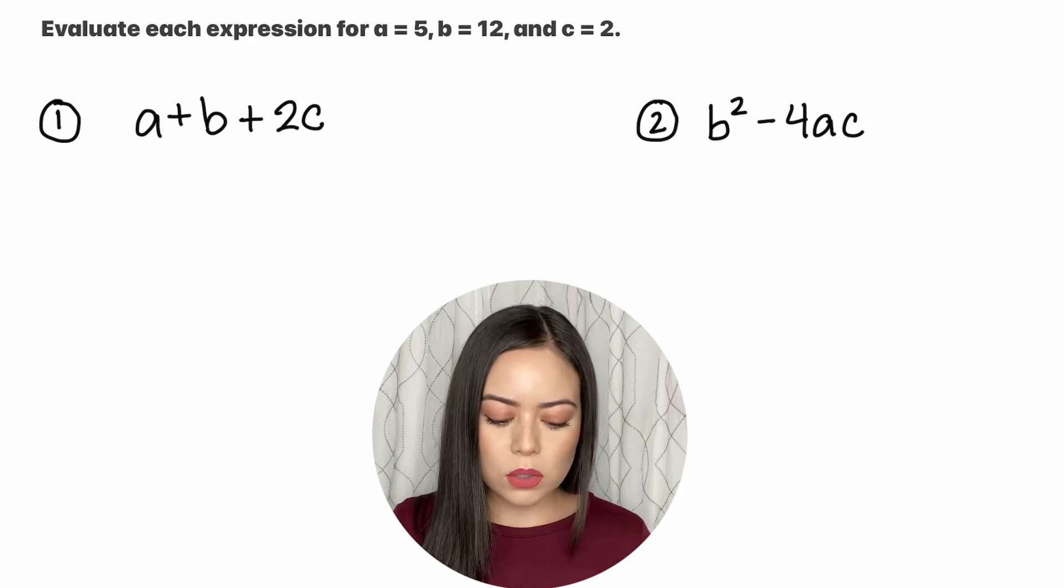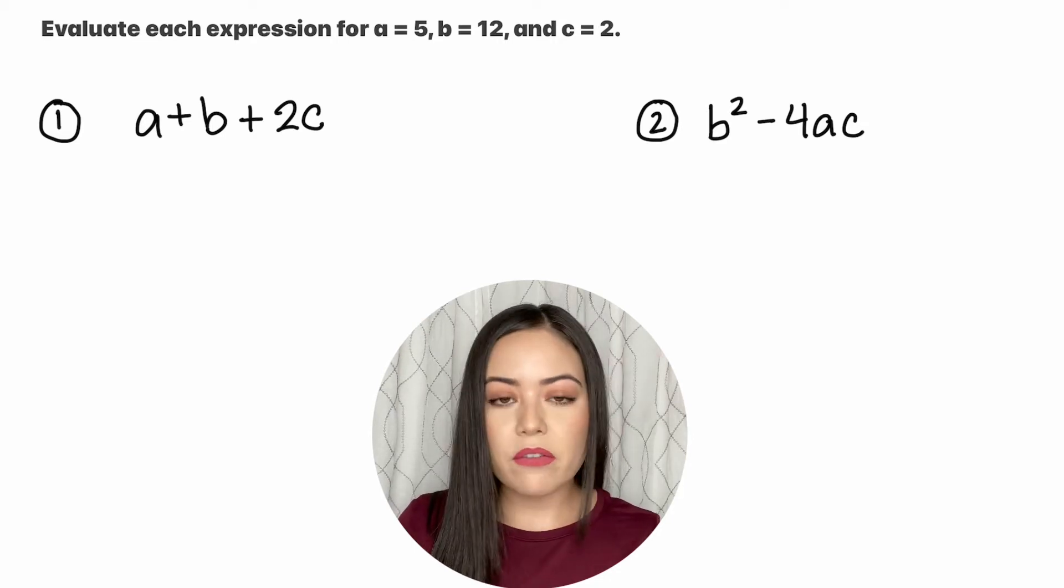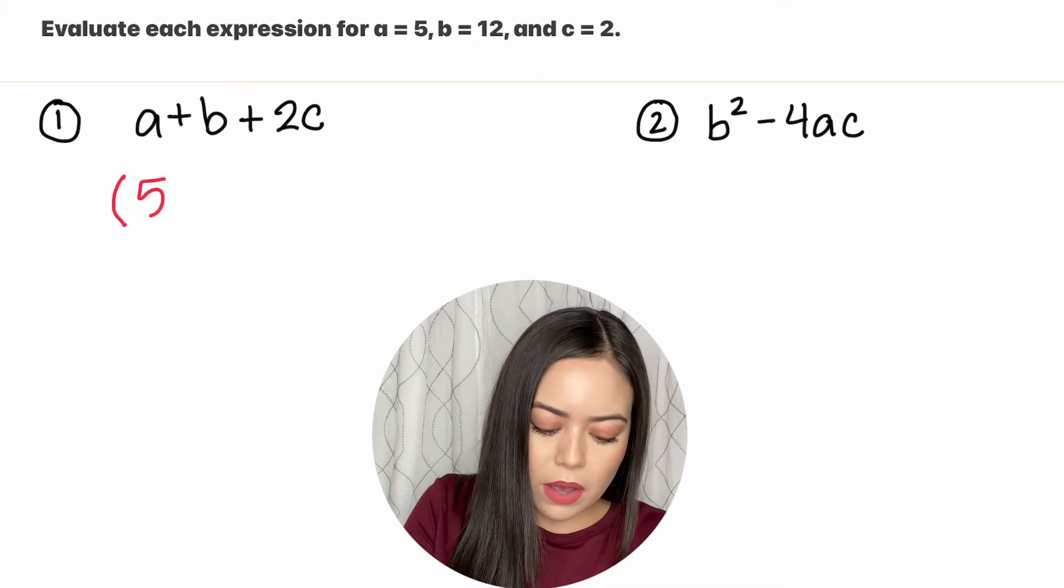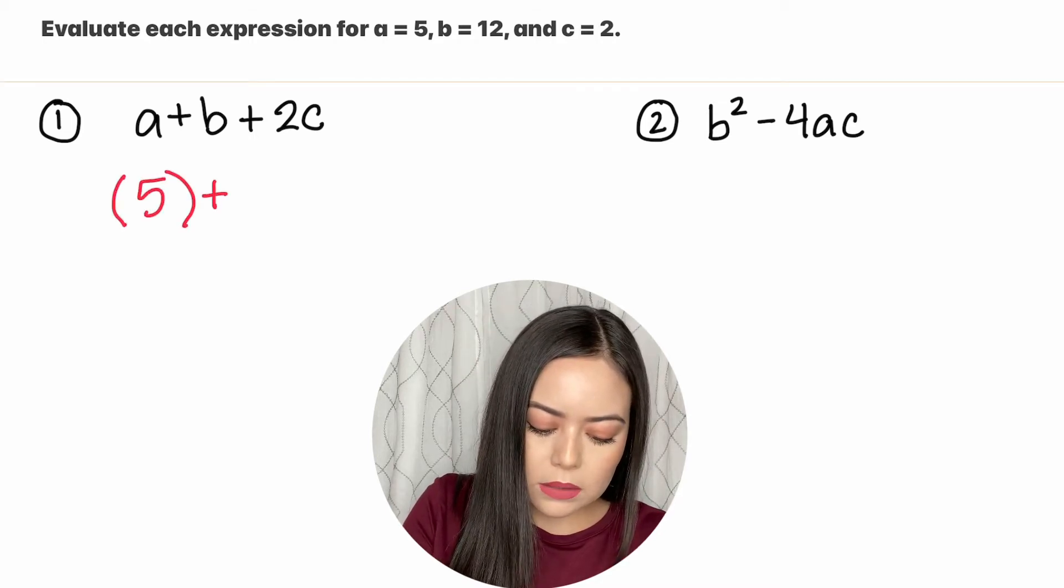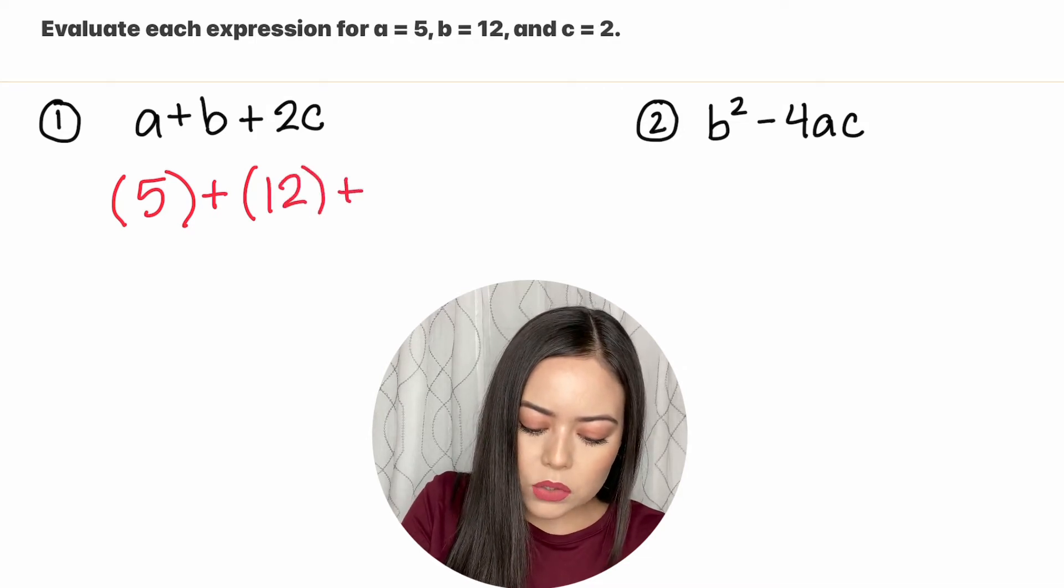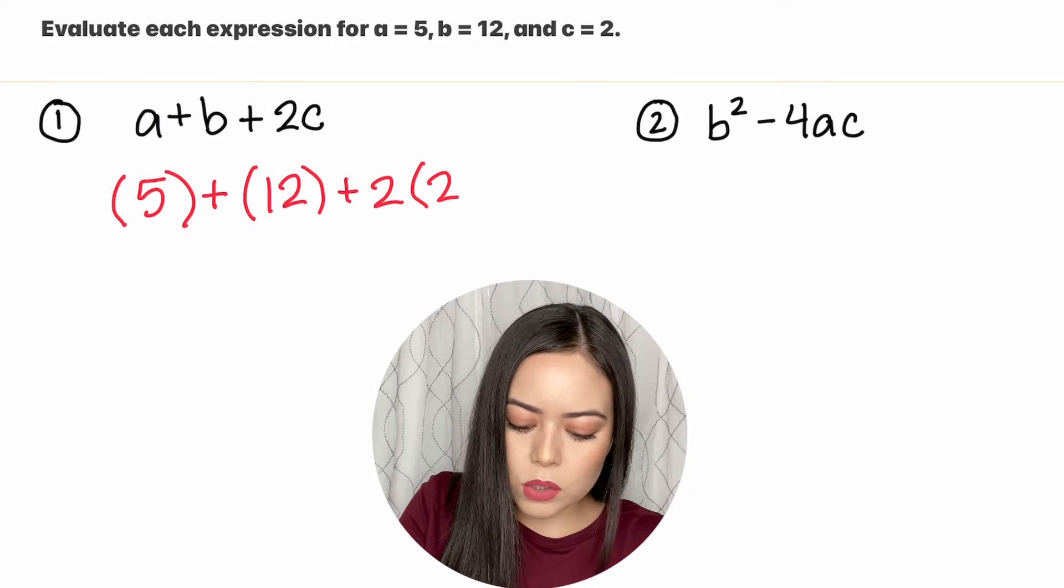So let me show you how to do that with question one. So a is 5 according to the direction, so we're going to say 5 plus and then our b value is 12, so we're going to say plus 12 plus 2 times our c value which they said was 2.